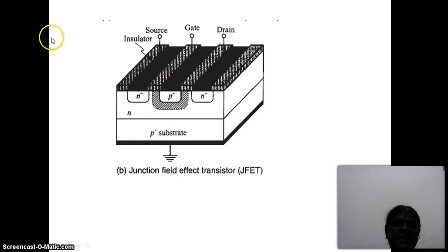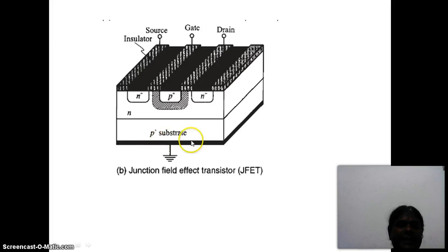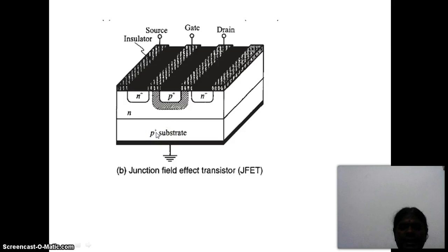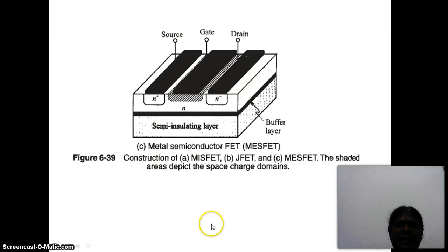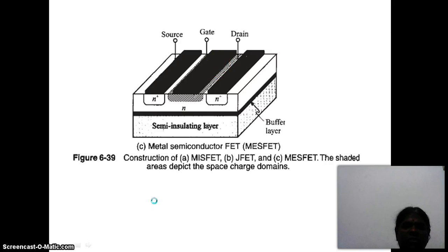Next is JFET — this diagram shows that reverse biased PN junction is used to isolate the gate and the channel. There are three terminals: source, gate, and drain. The next category is MESFET — metal semiconductor FET — where the Schottky contact is used. That is, metal contact with the semiconductor is used to isolate the gate from the semiconductor material. This indicates the structures of FET.